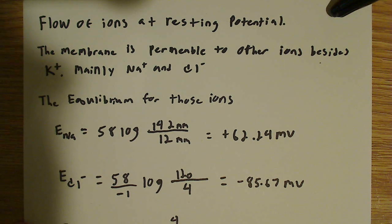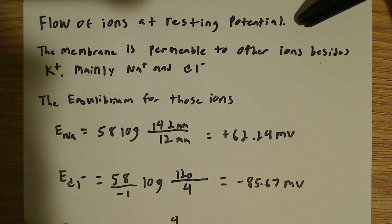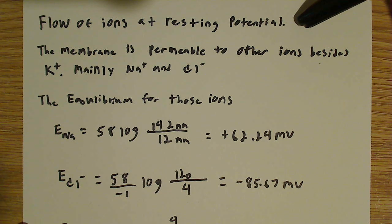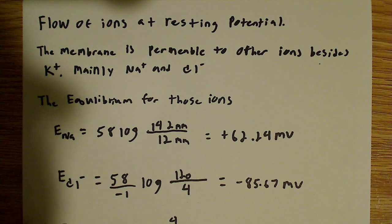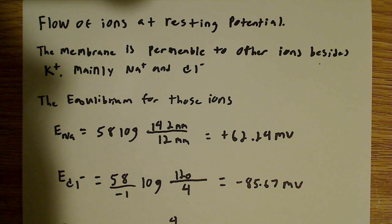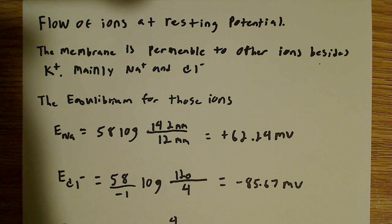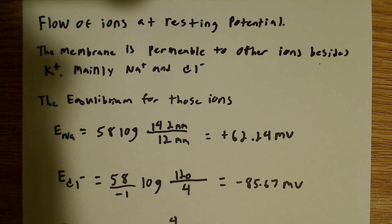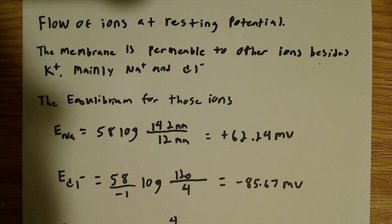So the flow of ions at resting potential — we want to know which way these ions are flowing. The membrane is permeable to ions other than potassium, so mainly sodium and chloride. Originally it was thought that the membrane was only permeable to potassium ions, so people calculated only the equilibrium potential for potassium.